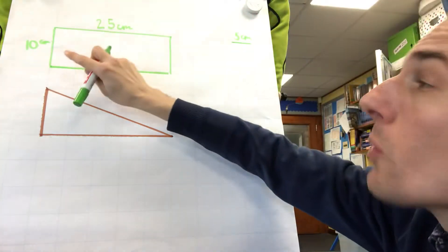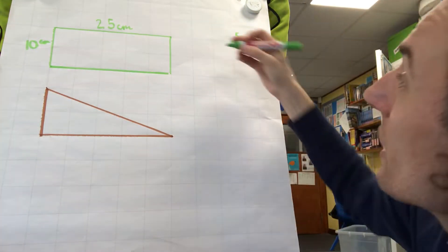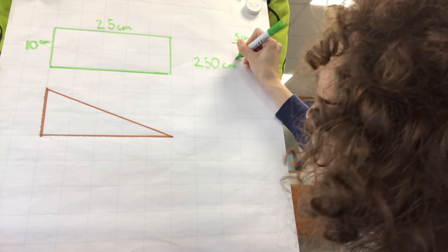So to find the area, as we know, we multiply the width and the length. 10 times 25 would be 250 centimetres squared.